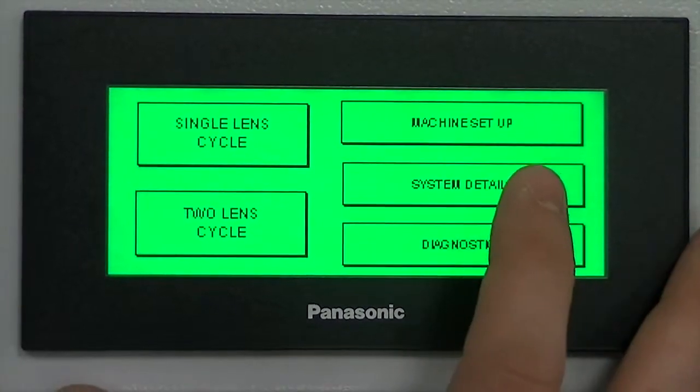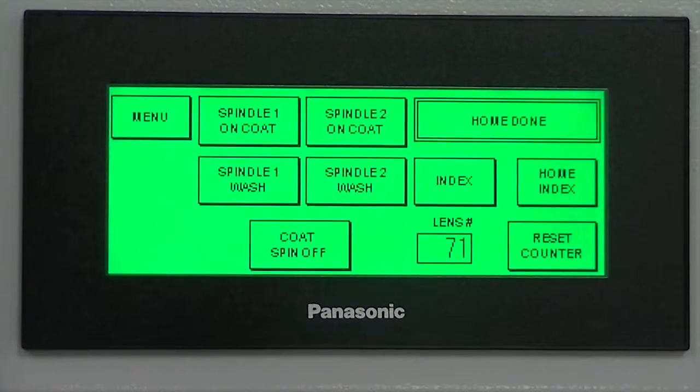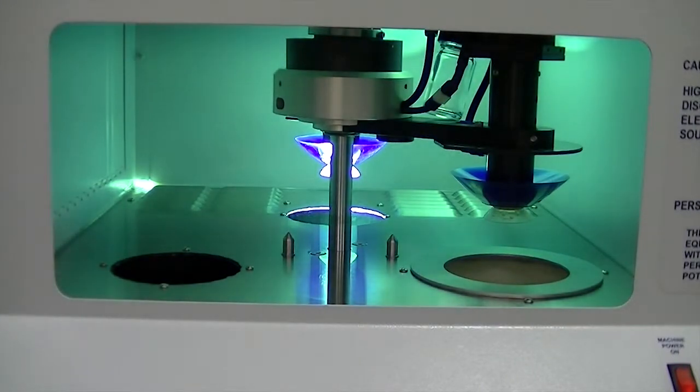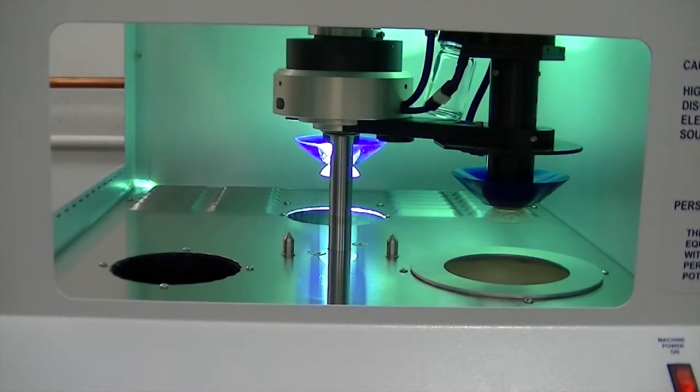From the main menu select system details. Use a piece of metal to cover over the UV chamber to block light, as the light can affect the tachometer reading.